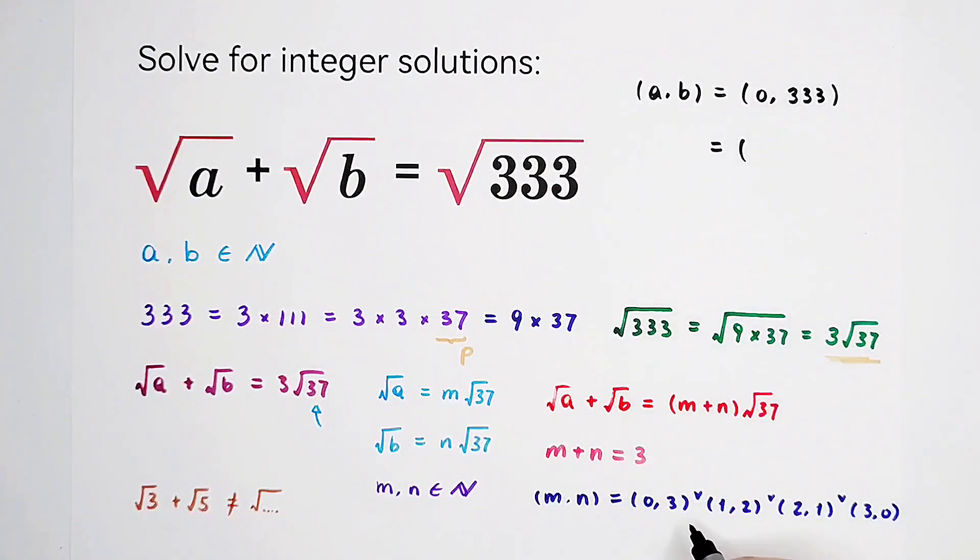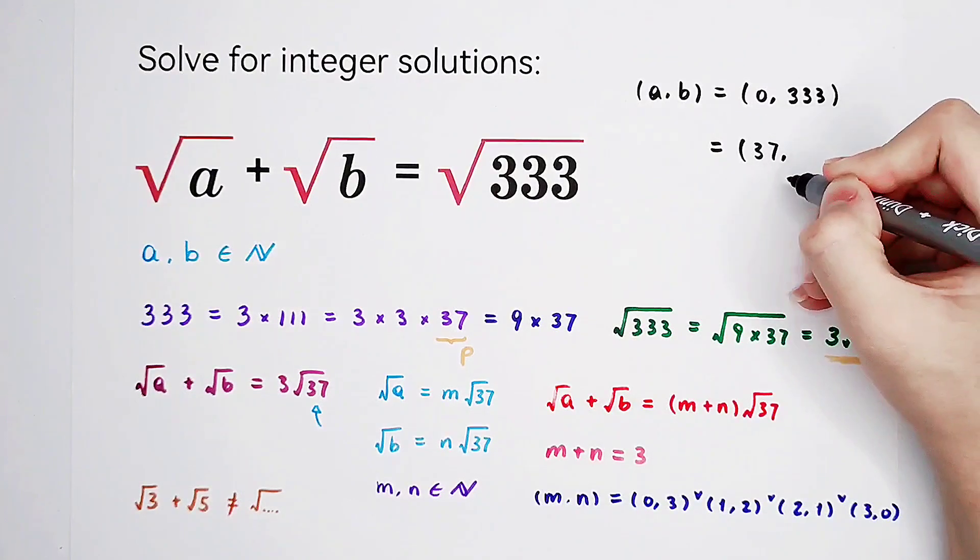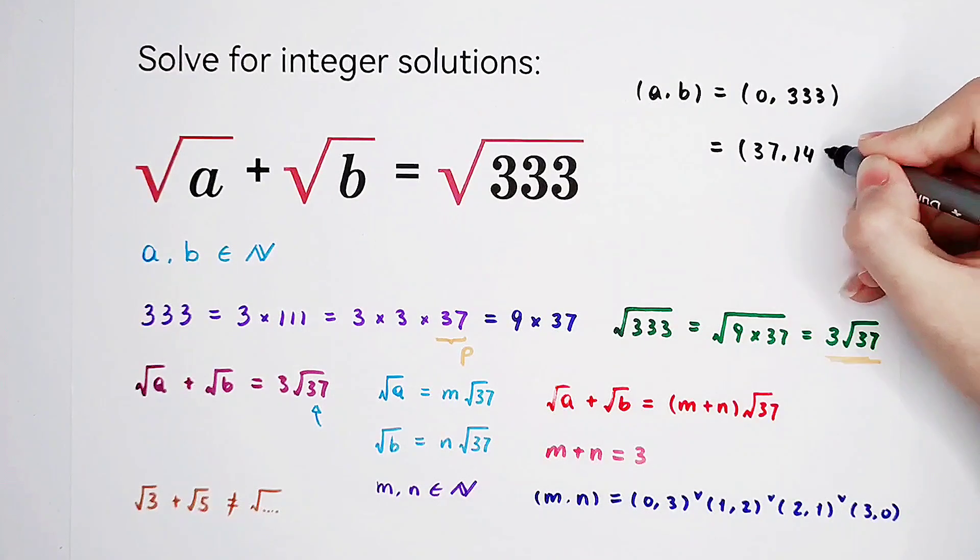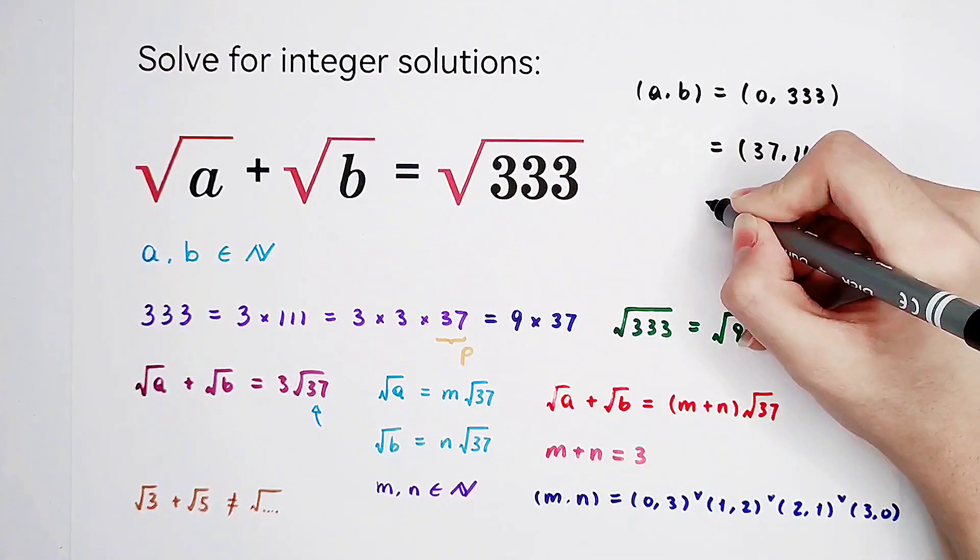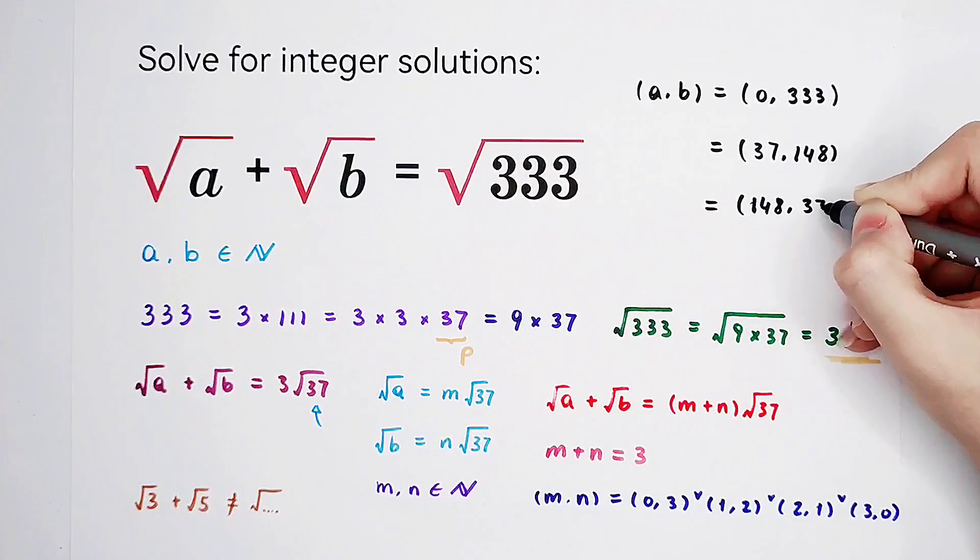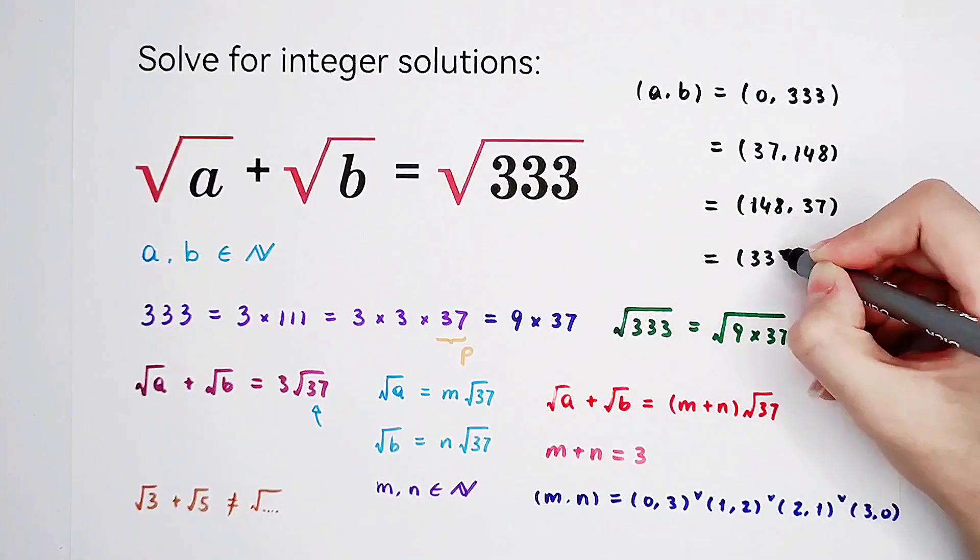And what else? m is 1. That means a is 37. In this case, b is 4 times 37. So it is 148. The third case is 148, 37. In the last case, it is 333, 0.